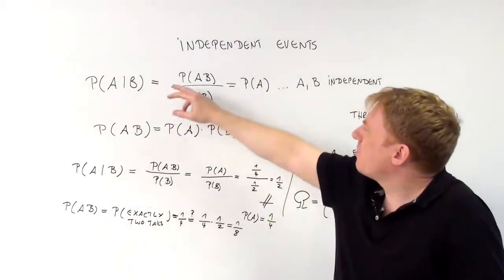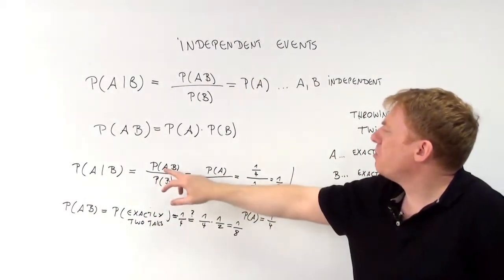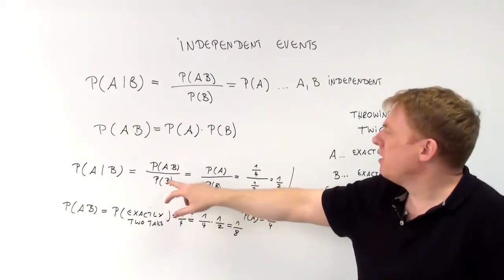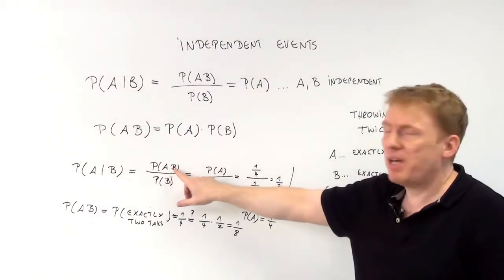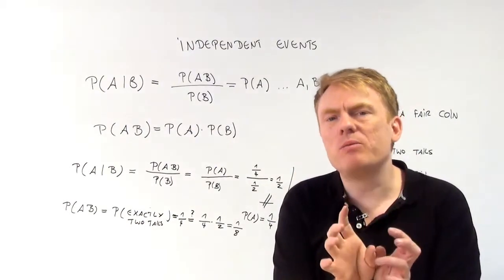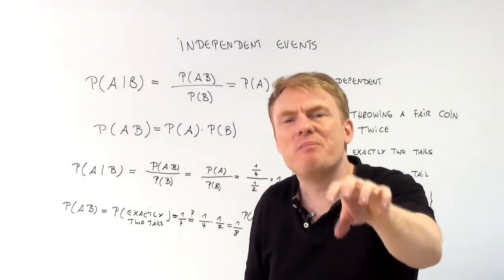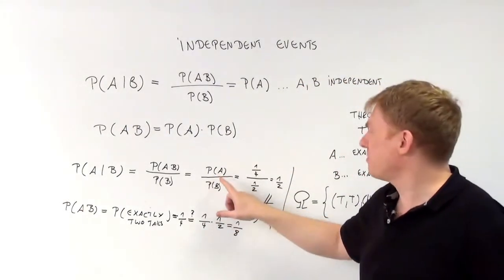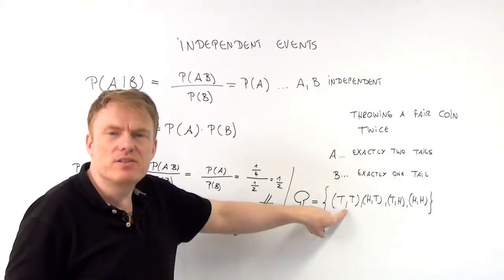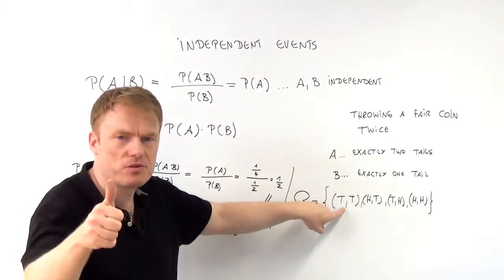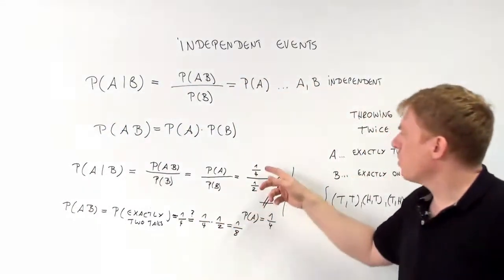Let's apply the formula. The probability of A given B equals P(A and B) divided by P(B). The event of having two tails and having one tail at the same time means we are looking at the event of having exactly two tails. The probability of that is 1 out of 4 — it is the elementary event tail-tail, one out of four possible outcomes. So P(A and B) = 1/4.